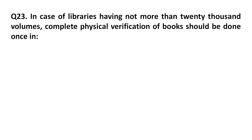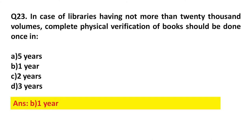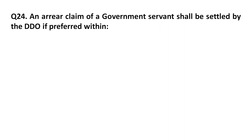Question 23: In case of libraries having not more than 20,000 volumes, complete physical verification of books should be done once in how many years? Option A: Five years. Option B: One year. Option C: Two years. Option D: Three years. Answer: One year.